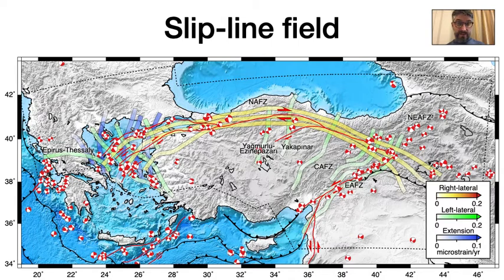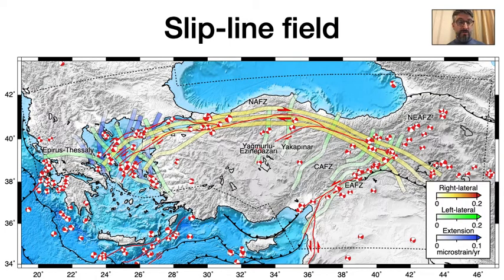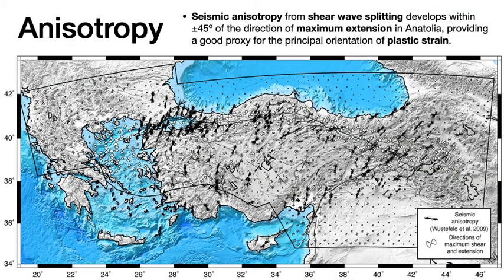The orientation of plastic strain rate is overall closely aligned with the focal mechanisms of strike-slip earthquakes. In the Aegean, the direction of maximum extension, shown with the blue spaghettis, runs north-south, showing the predominance of trans-tension. The seismic anisotropy closely aligns with the direction of maximum extension of the underlying plastic strain rate in the mantle, showing a strong coupling between deformation in the mantle by ductile flow and the orientation of faults and earthquake focal mechanisms in the brittle crust.